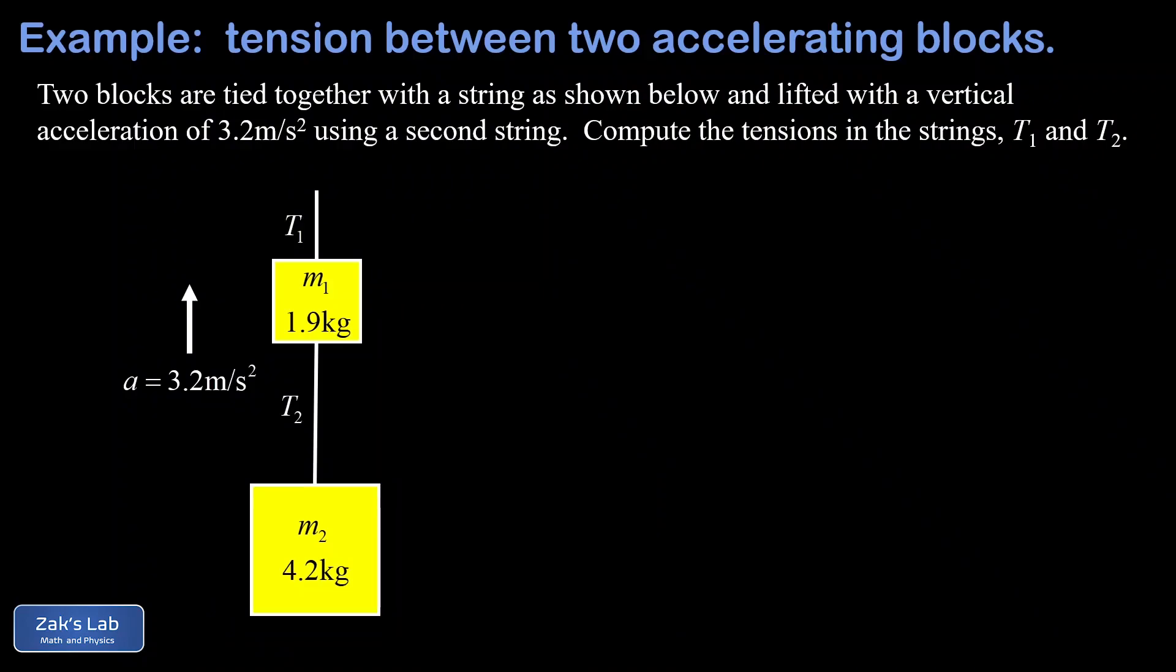In this problem we're given a combination of two blocks: a 1.9 kilogram block on top and 4.2 kilograms on the bottom. These blocks are tied together with a string that has a tension of T2, and we use a second string with a tension of T1 to pull the combination upward with a given acceleration of 3.2 meters per second squared. The question is: what are the tensions T1 and T2 in those two strings?